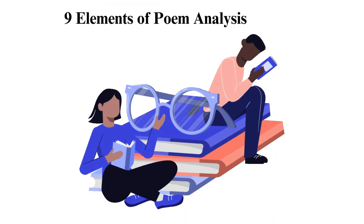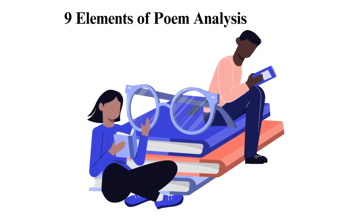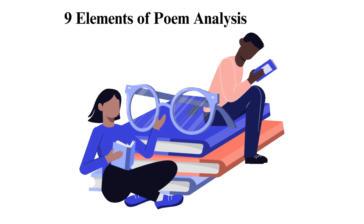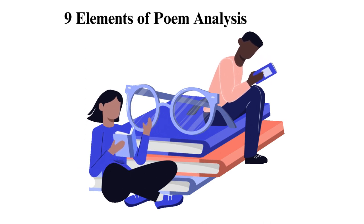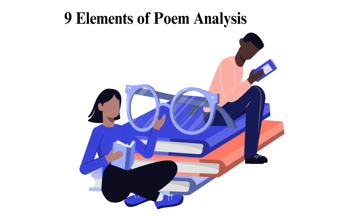Nine elements of poem analysis. Form simply means the structure of a poem. It includes rhythm, rhyme systems, and repetition.